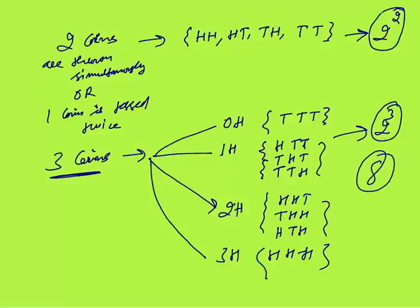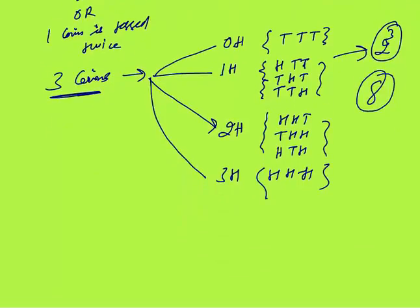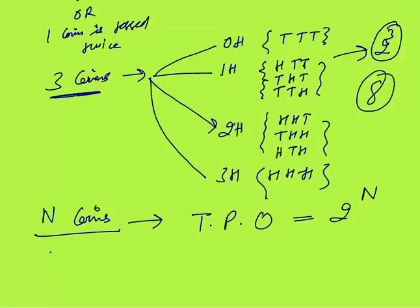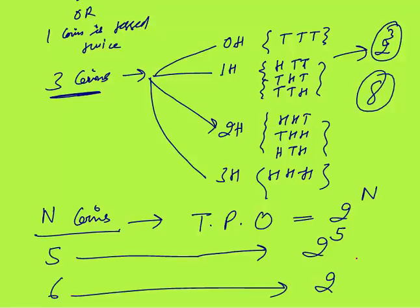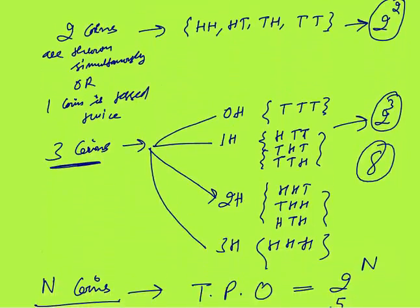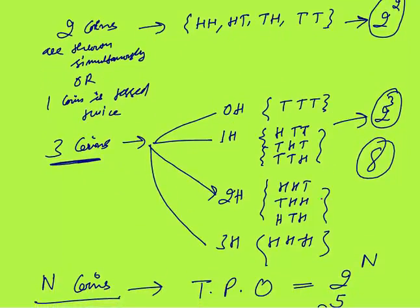So there is a pattern: two coins give 2², three coins give 2³. In general, when n coins are thrown (or one coin is thrown n times), the total possible outcomes are 2 raised to the power n. For example, five coins → 2⁵, six coins → 2⁶. Up to three coins, you should know how to enumerate the pattern: zero heads, one head, two heads, three heads.